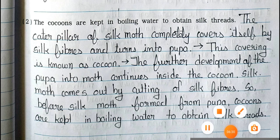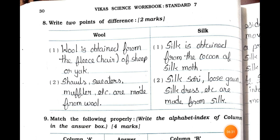Now see the next page. Main 8: Write two points of difference — distinguish between wool and silk. Point 1: Wool is obtained from the fleece and hair of sheep or yak, and silk is obtained from the cocoon of silk moth. Point 2: Shawls, sweaters, mufflers, etc. are made from wool, and silk saris, loose gowns, silk dresses, etc. are made from silk.